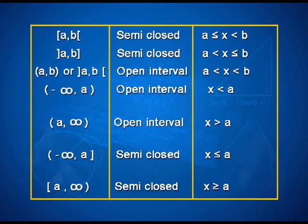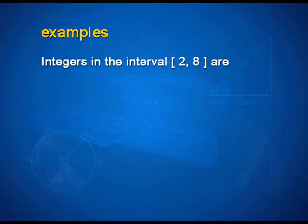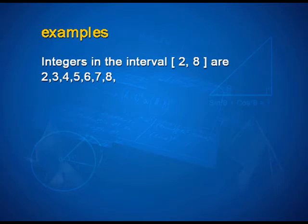Similarly, (-∞, A] has a closed bracket at A and open bracket at minus infinity. This is a semi-closed interval depicting all values x less than or equal to A — note minus infinity cannot be included but A here is included. Similarly, [A, +∞) is a semi-closed interval depicting all numbers x greater than or equal to A. Let us take some examples. The integers in the interval [2, 8] are 2, 3, 4, 5, 6, 7, and 8.